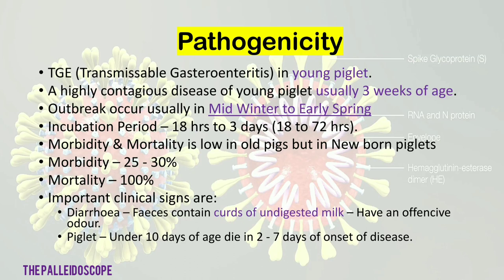Incubation period is 18 hours to 3 days (18 to 72 hours). Morbidity and mortality are low in older pigs, but in newborn piglets morbidity is 25 to 30% and mortality is 100%. Important clinical signs are curds of undigested milk in the feces, diarrhea, and offensive odour of feces. Piglets under 10 days of age die within 2 to 7 days of onset of disease.